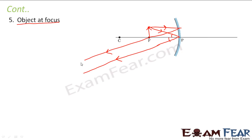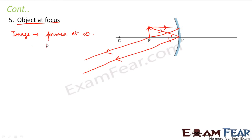We assume that these two rays will meet somewhere at infinity. Just as when the object was at infinity we assumed that rays are coming parallel because we don't know from where exactly they are starting, similarly when these two rays are going parallel we assume that at some infinite point they will meet. Therefore, we assume that the image will be formed at infinity.